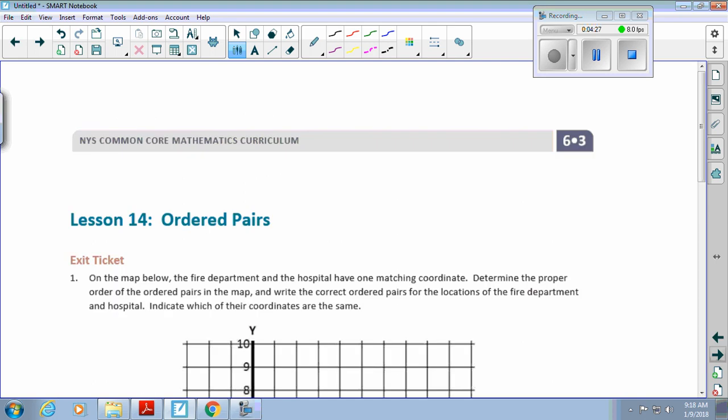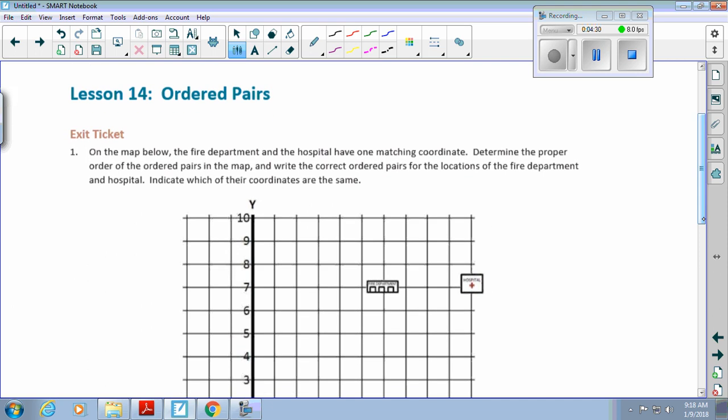Here we go. We are going to move on to our review of ordered pairs. We're skipping a few pages. We're going to page 58 in your module book. This is lesson 14. Ordered pairs. What's another name for ordered pairs? Coordinates. How do we write coordinates? X coordinate and then Y coordinate.